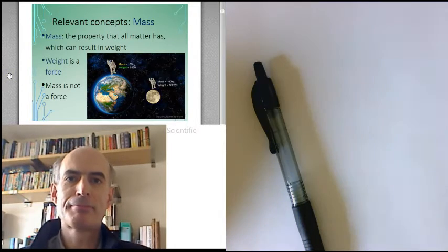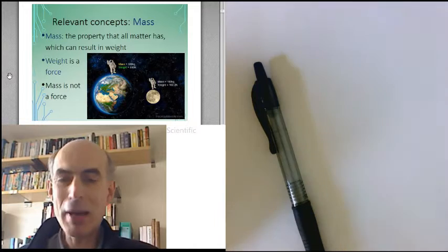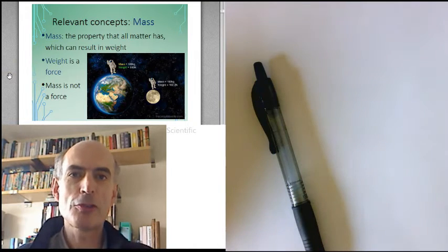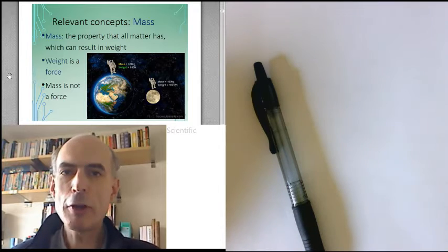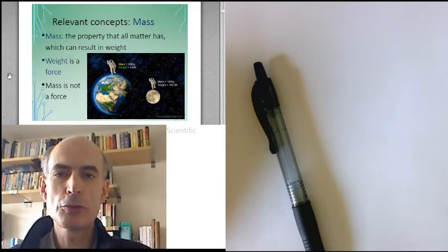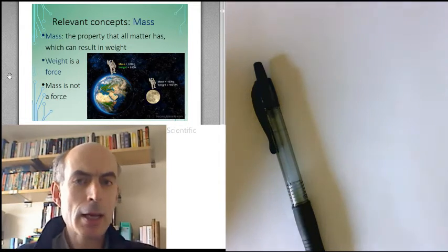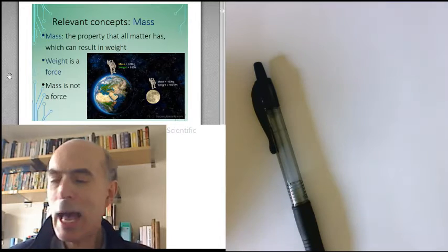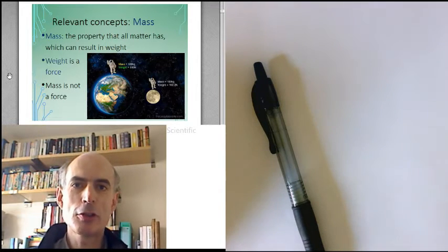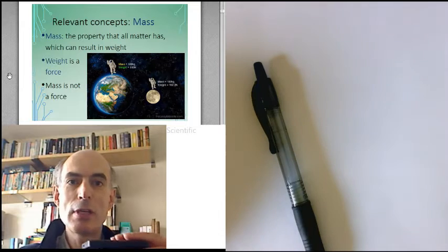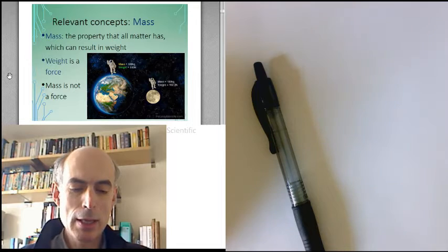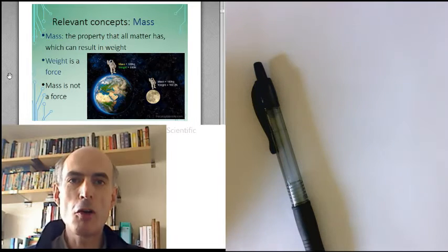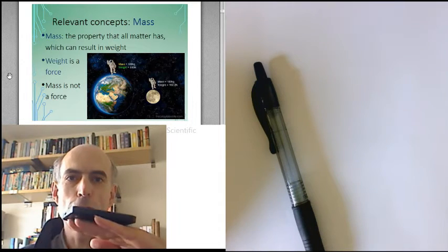Mass. Mass is the property of matter which results in it having weight, that force of weight. Fundamental property of almost all types of matter. The fact that it has weight is a function of the fact that it is near the Earth, which is providing a large gravitational attraction. And it's the action of gravity on that mass that produces the force.